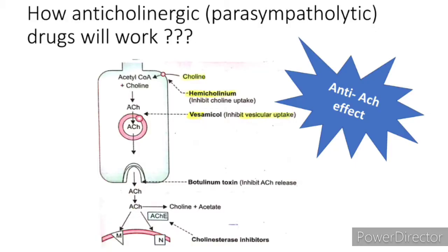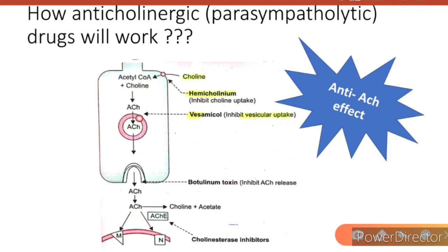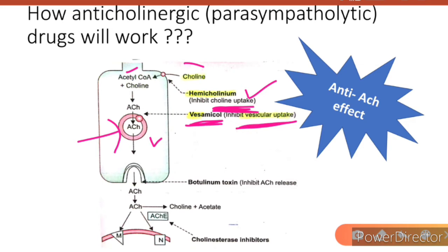Anticholinergic is also called parasympatholytic. Let's see how these drugs work. From our cholinergic lecture: acetylcholine is formed when choline combines with acetyl-CoA, then stored in vesicles until an impulse arrives. Hemicholinium is an anticholinergic drug that inhibits choline uptake, so acetylcholine cannot be formed. Vesamicol inhibits the vesicular uptake of acetylcholine.